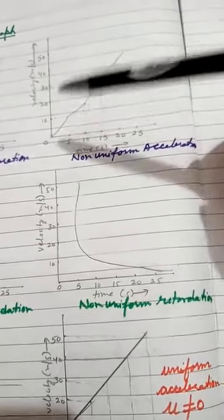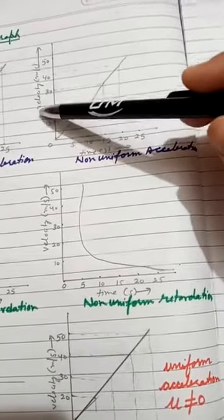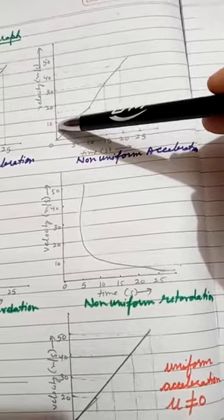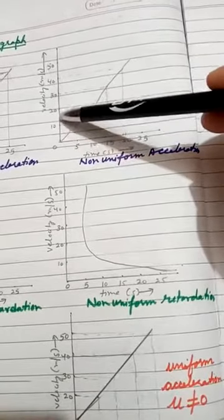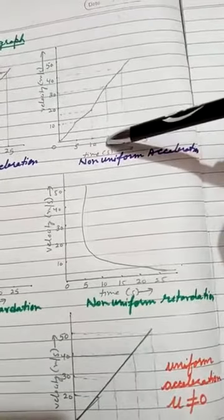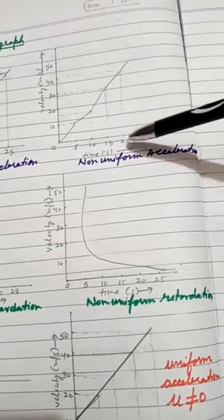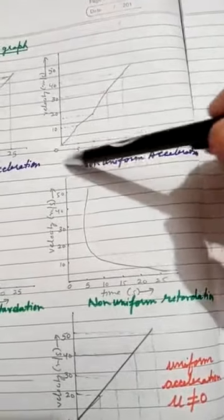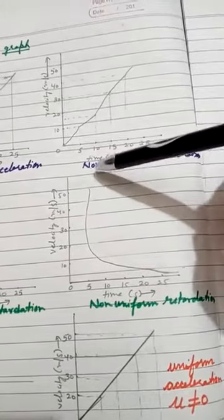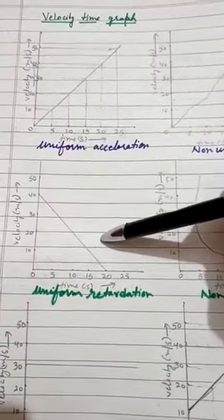For non-uniform acceleration, the graph will not be a straight line — it may be zigzag or some other curve. Here time is 5, 10, 15, 20 seconds, but the object is moving with variable velocity: in the first 5 seconds it moves at 10 m/s, in the next 5 seconds only 5 m/s, in the next 5 seconds at 15 m/s, and in the next 5 seconds at 10 m/s. Unequal velocity with equal time intervals — this is the graph for non-uniform acceleration.